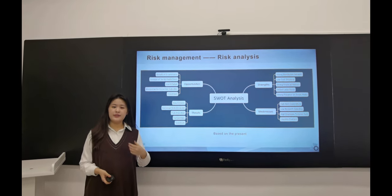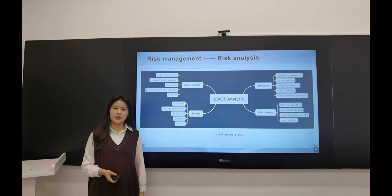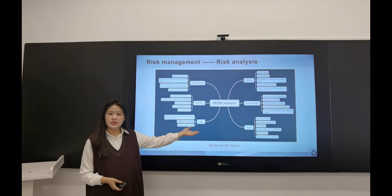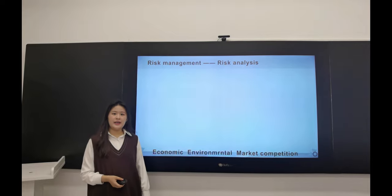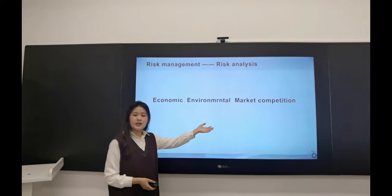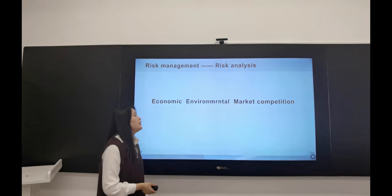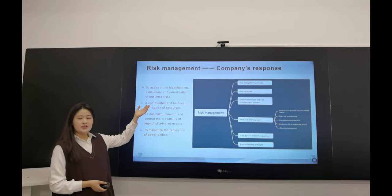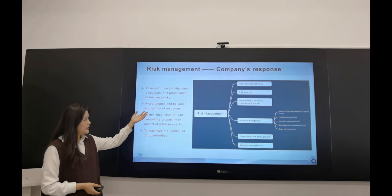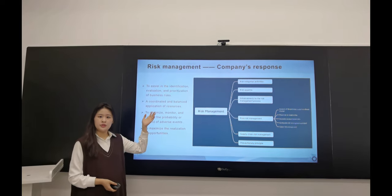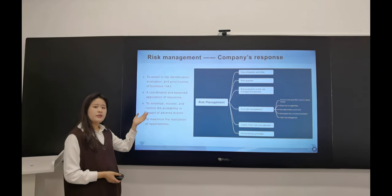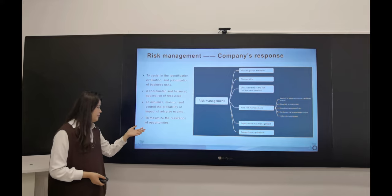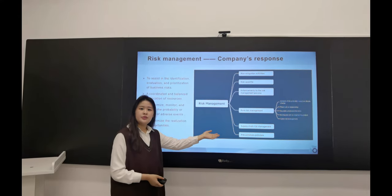Let me introduce the risk management and financial outlook of C&H Industry. The SWOT analysis based on the present and the PESTEL analysis based on the future show that the main risks are concentrated in economic factors, environmental factors, and market condition factors. In order to be risk averse, we need to focus on the identification, evaluation, and prioritization of business risks, followed by a coordinated and balanced application of resources to minimize, monitor, and control the probability or impact of adverse events, or to maximize the realization of opportunities. The framework is as shown here.